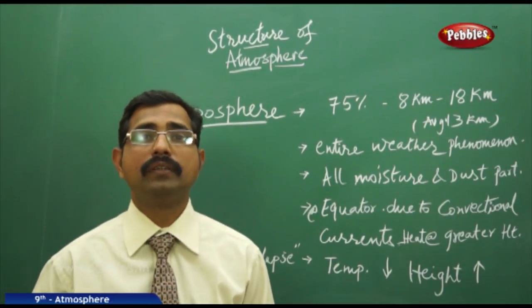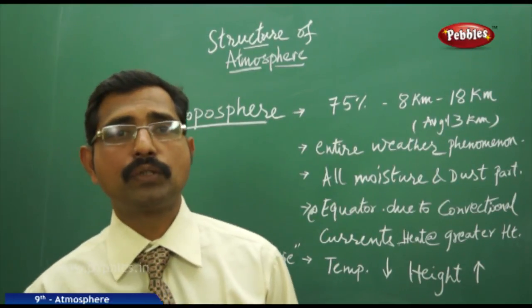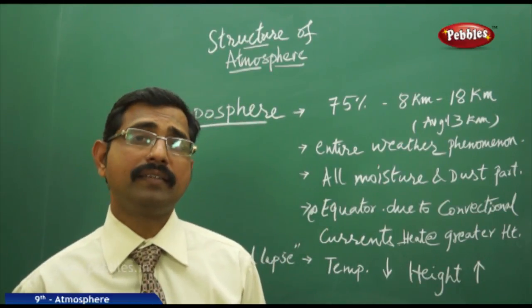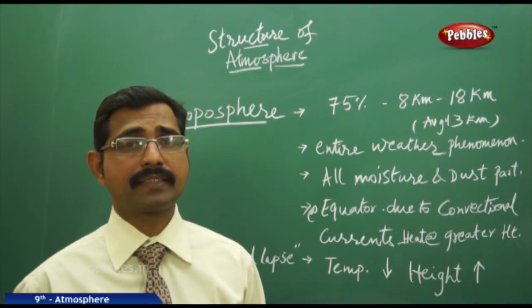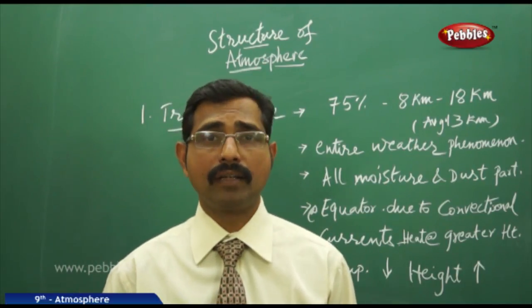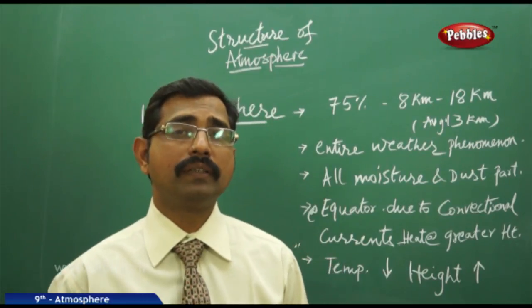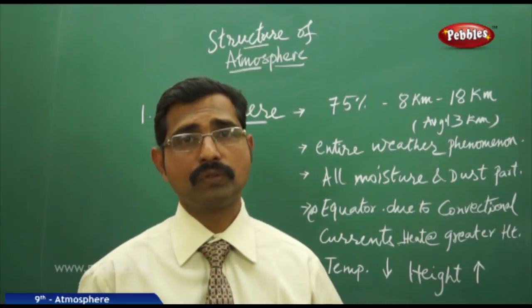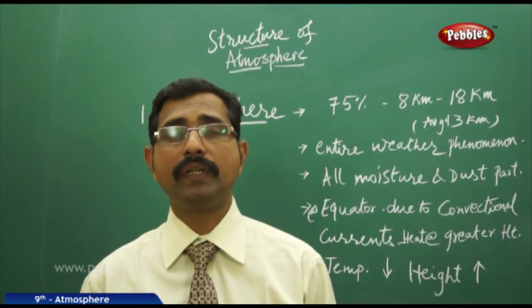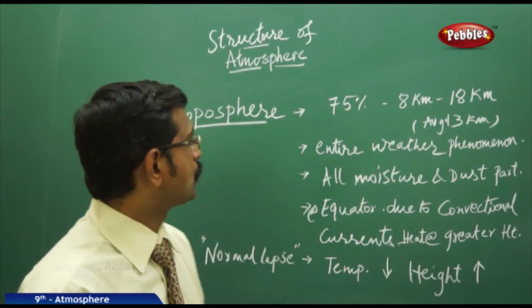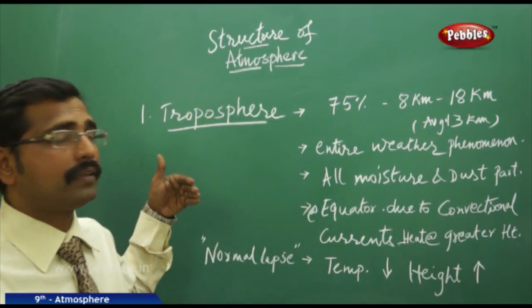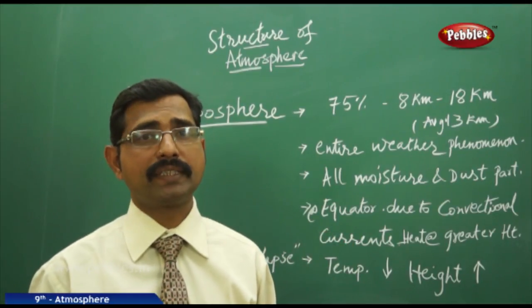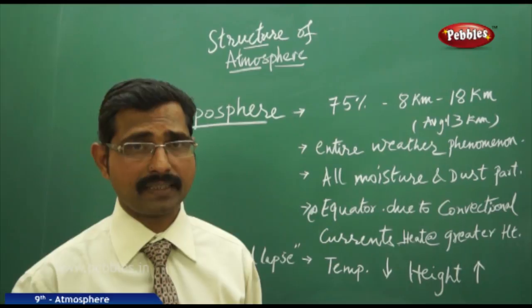Based on chemical composition there are two layers — homosphere and heterosphere. At the same time, based on temperature and density there are various other types of layers existing in the atmosphere. In total we have five layers: three layers come under the homosphere and the other two come under the heterosphere. The homosphere exists up to 90 km in the atmosphere.